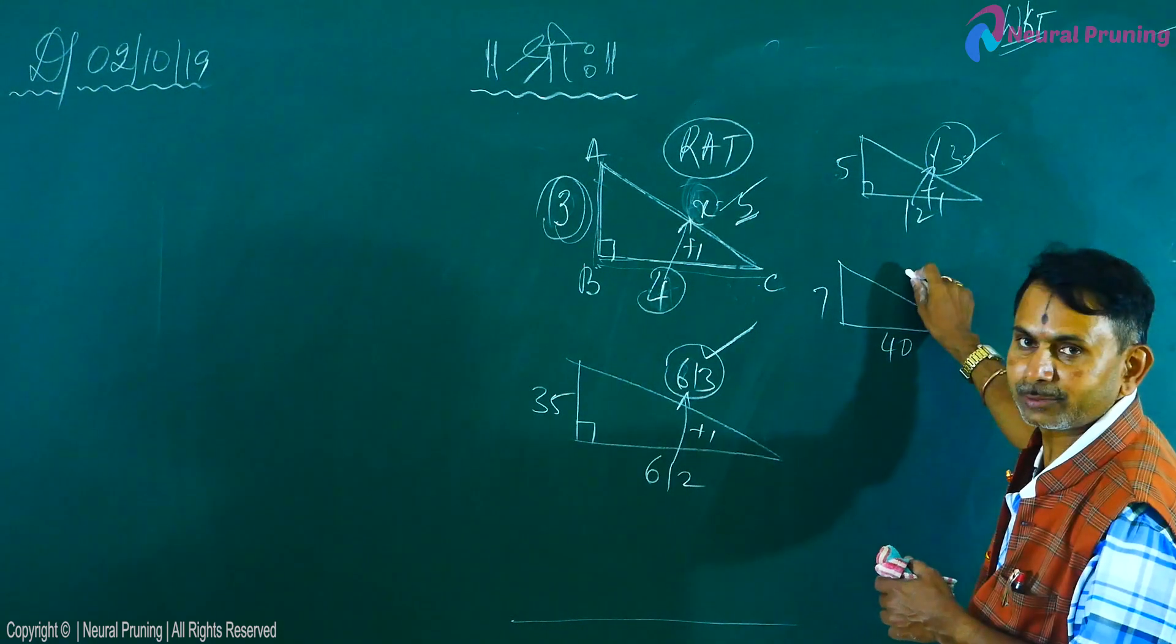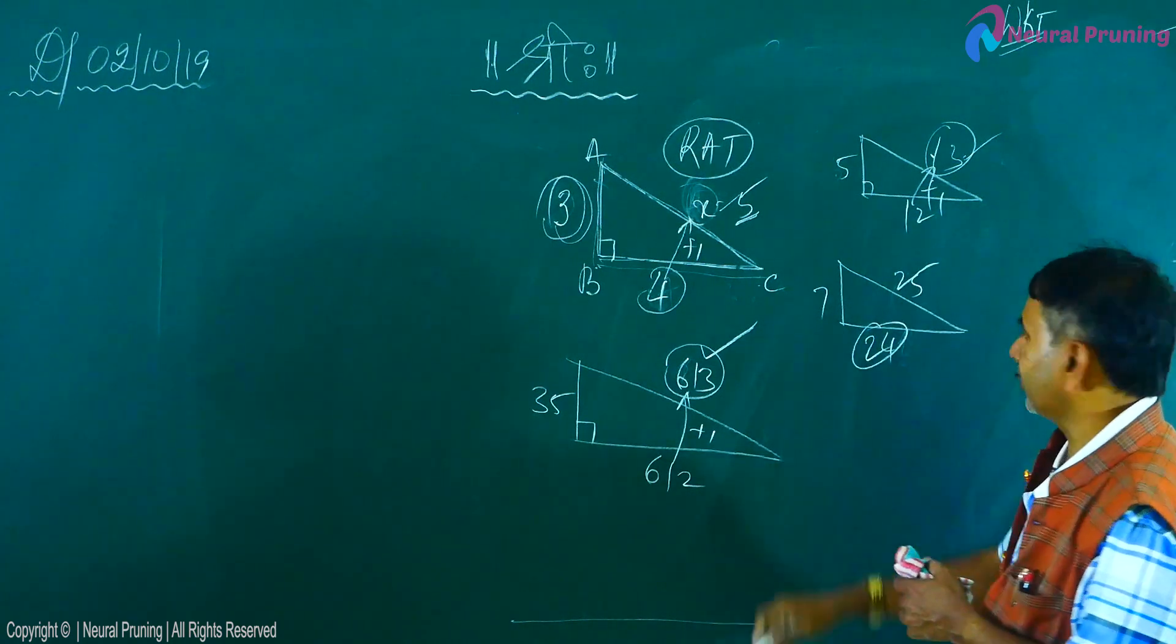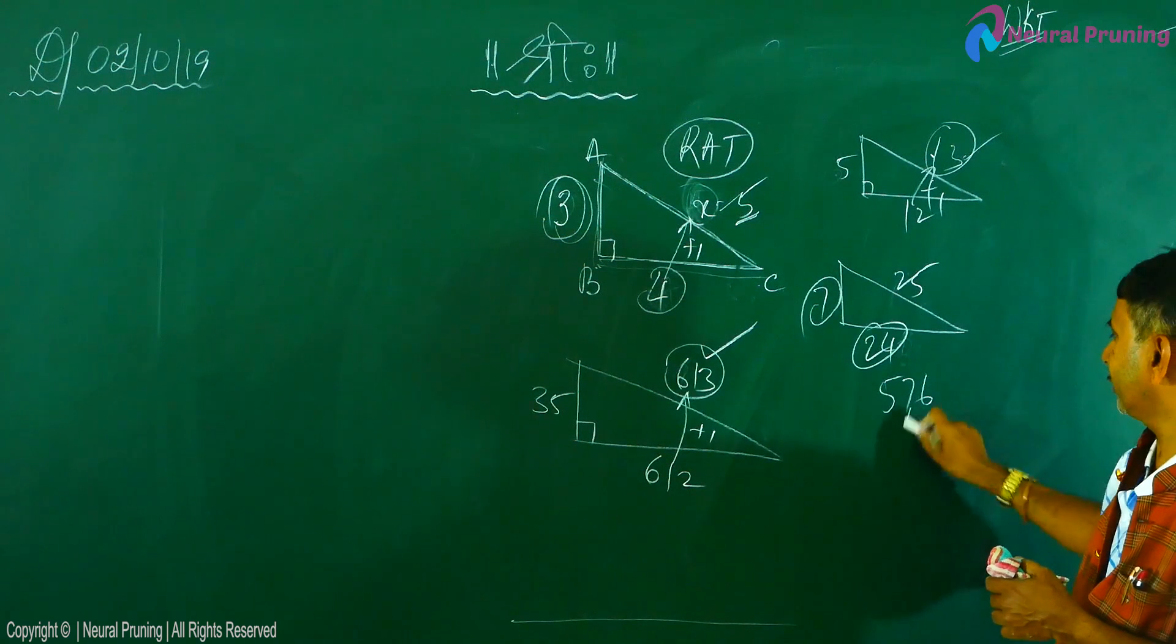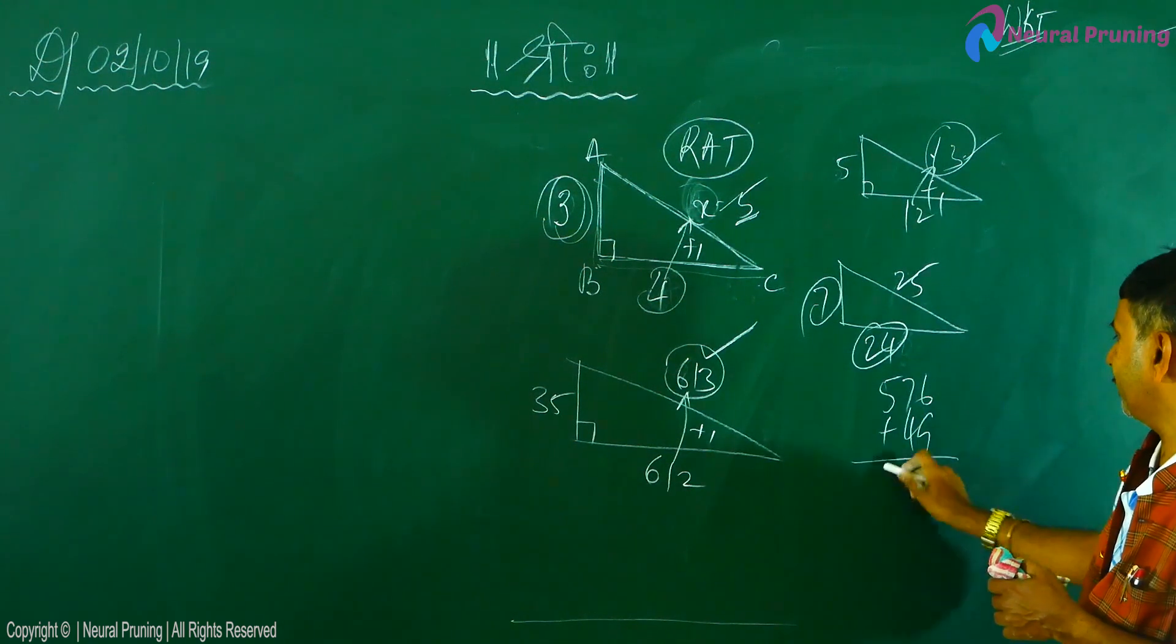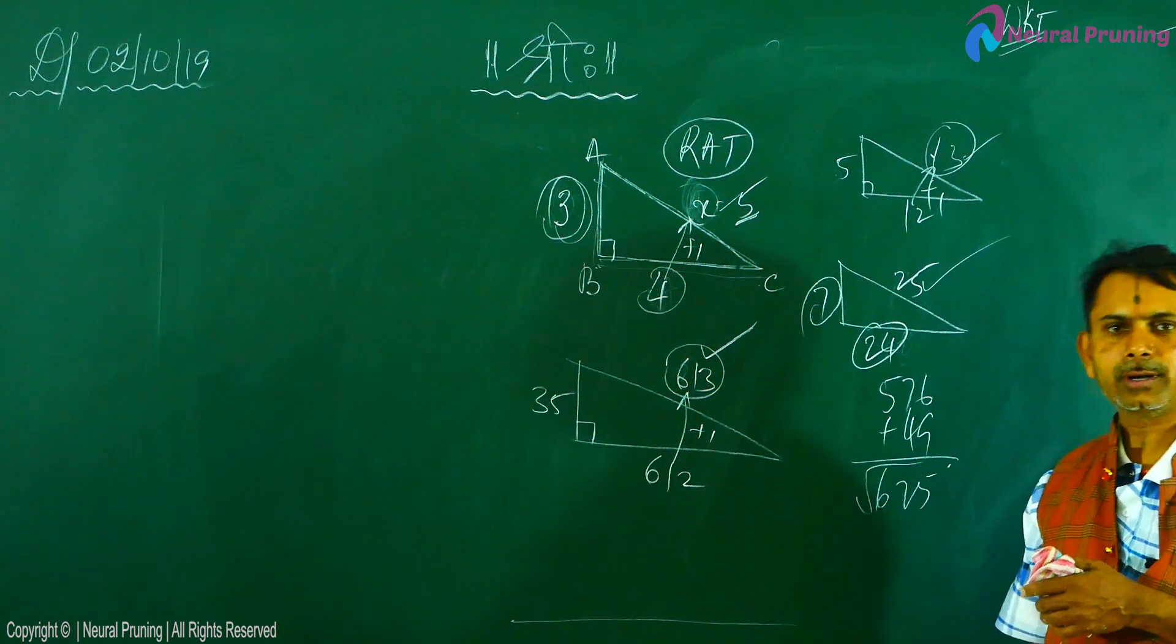What will be this? Call it as twenty-four. What will be this? Twenty-five. What is twenty-four square? Twenty-four square is what? Five seventy-six. Seven square is what? Forty-nine. If you add up, it will become what? Six twenty-five. Take square root. You will get twenty-five. Understandable?